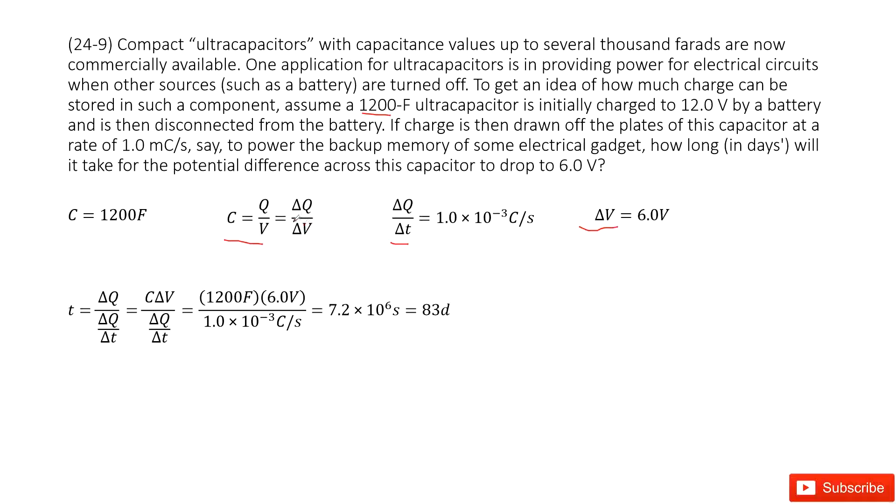So in this function, delta V is given, C is given. So the only unknown is delta Q.